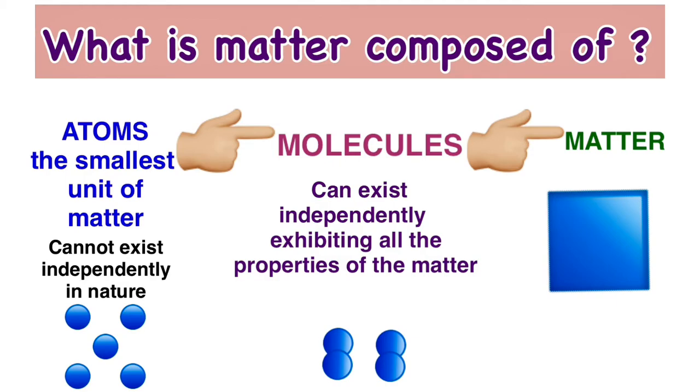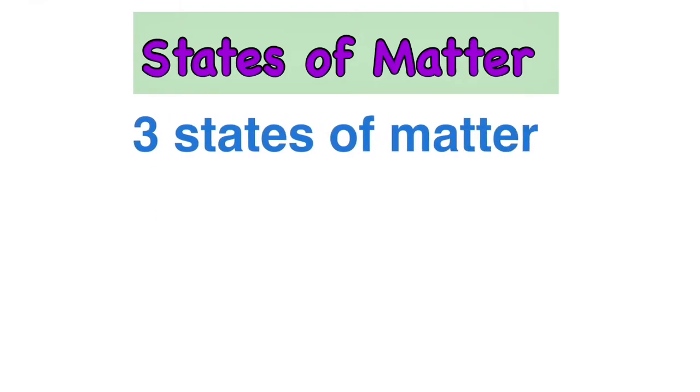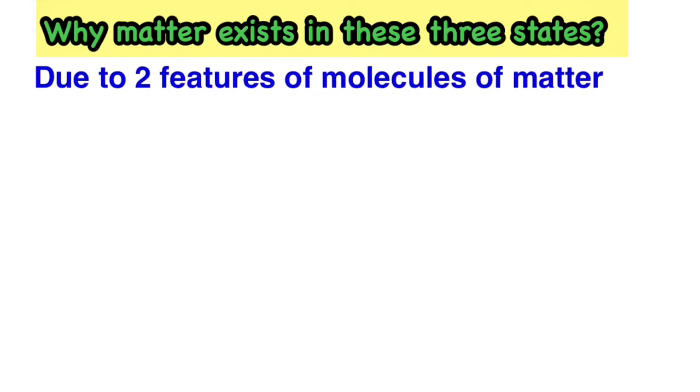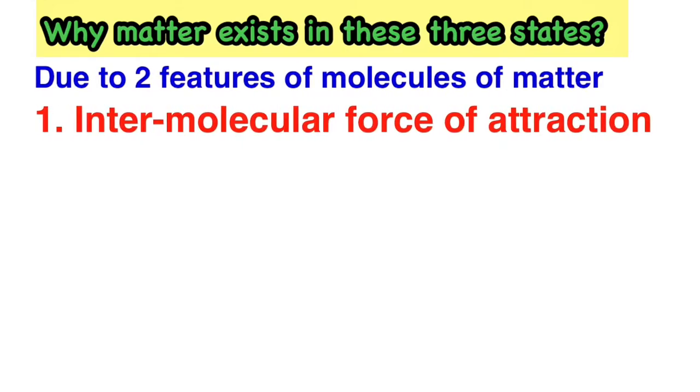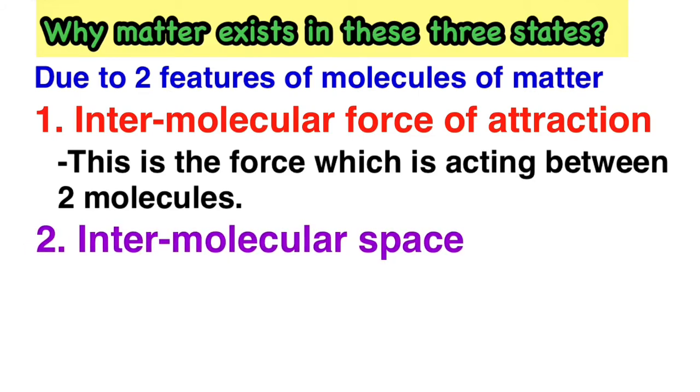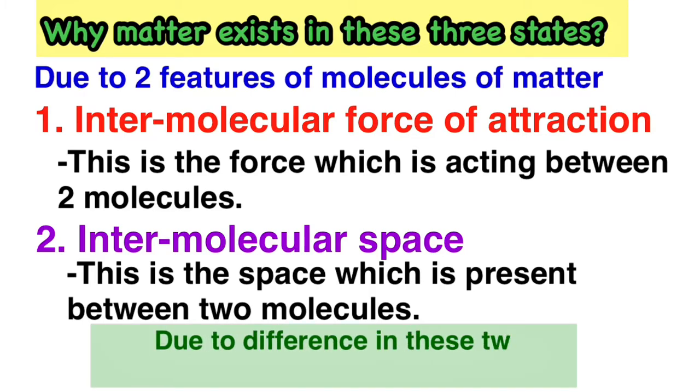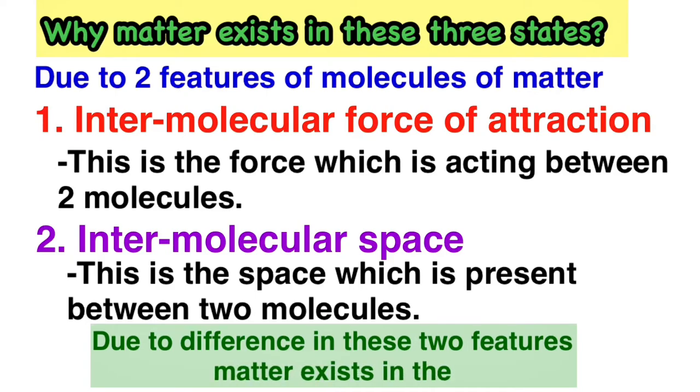In nature, matter generally exists in three states: solid, liquid, and gas. Why does matter exist in these three states? It is mainly due to two features of the molecules of matter. One: intermolecular force of attraction, the force which is acting between two molecules. Two: intermolecular space, the space which is present between two molecules. Due to the difference in intermolecular force of attraction and the intermolecular space in the different forms of matter, matter exists in three states.